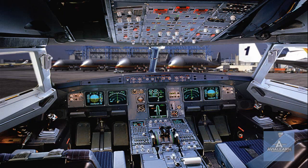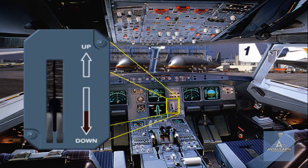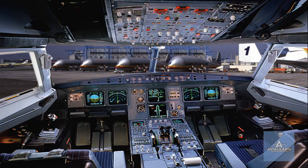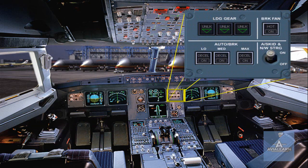Let's go to the cockpit to locate the controls and indicators for the landing gear, brakes and steering. The landing gear selector lever is located on the centre instrument panel. Just above the landing gear lever is a panel which contains switches and indicators for the landing gear.